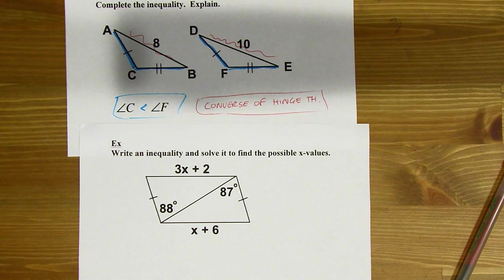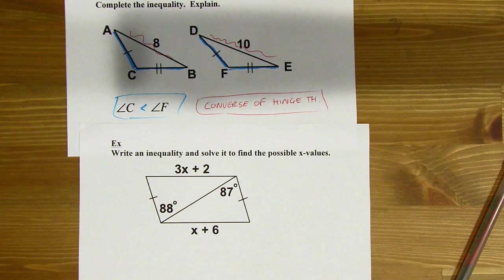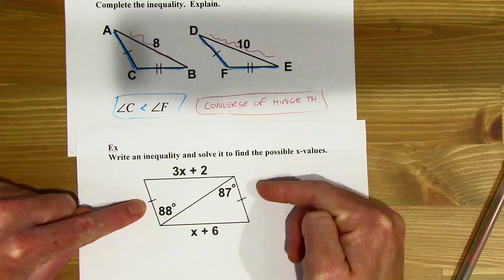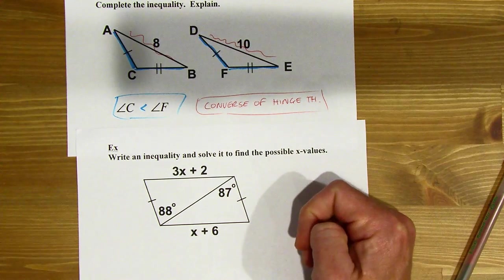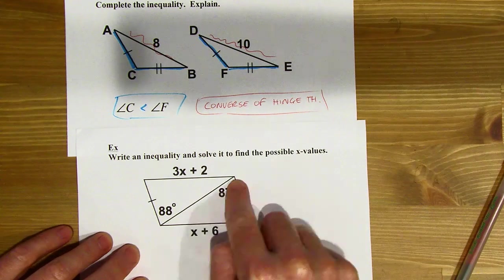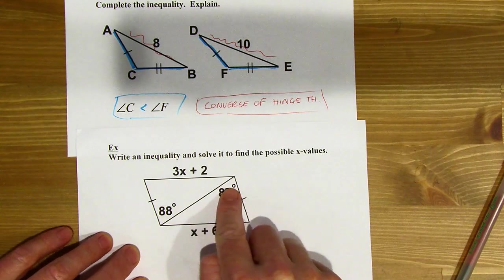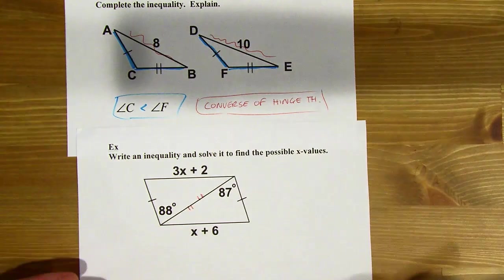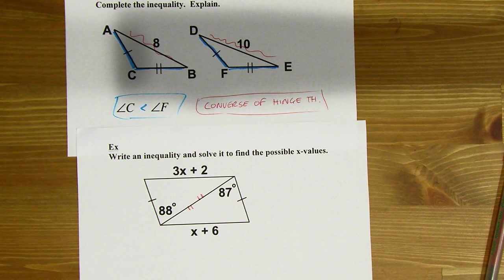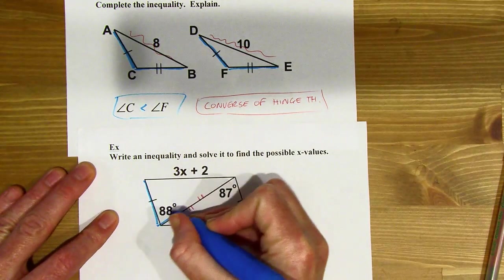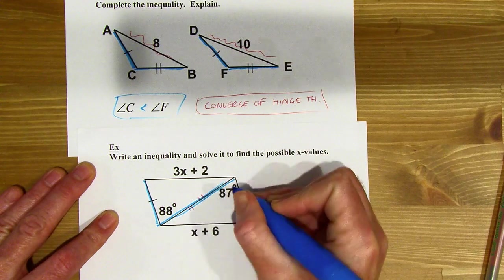Write an inequality and solve it to find the possible X values. So all that's really in this section is the hinge theorem and its converse. So I'm thinking I'm going to use the hinge theorem or its converse. So let's find our hinge. So I've got one set of congruent sides. Shoot, that's not enough. I need two. So I'm stuck. I guess I better give up. No solution. Wait a second. I think this segment is in both triangles. Oh, hang on. I do indeed have a hinge because I could use the reflexive property of congruence to say that that is congruent to itself.